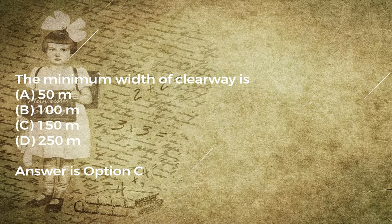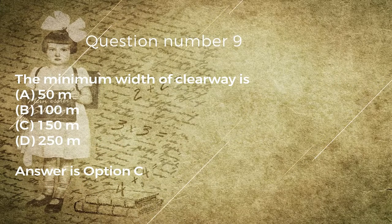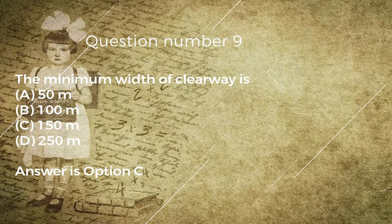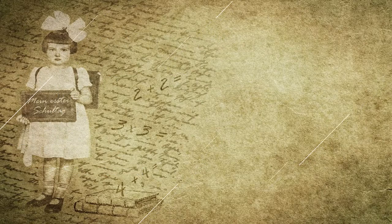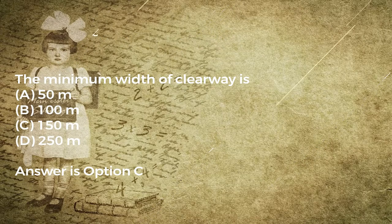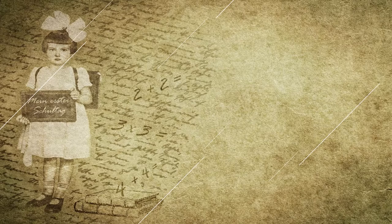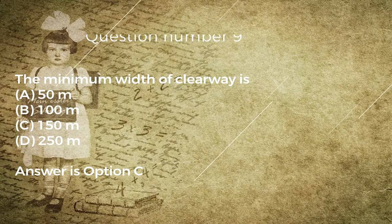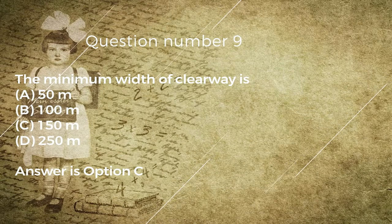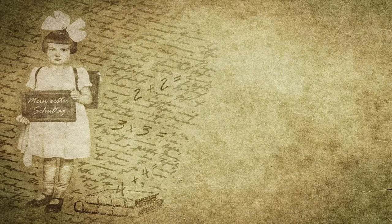Question number nine: the minimum width of clearway is: A) 50 M, B) 100 M, C) 150 M, D) 250 M. Answer is option C.